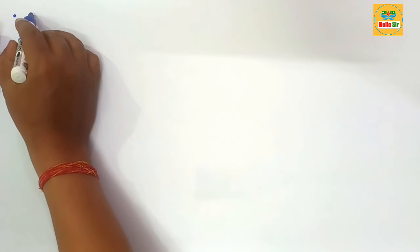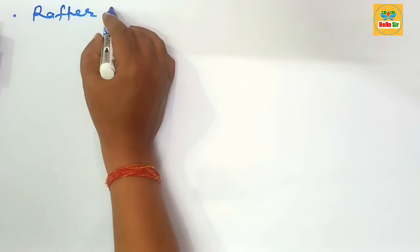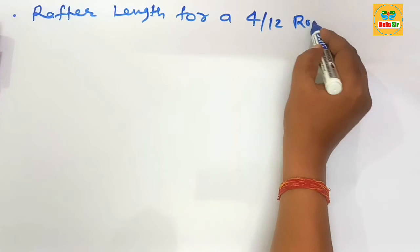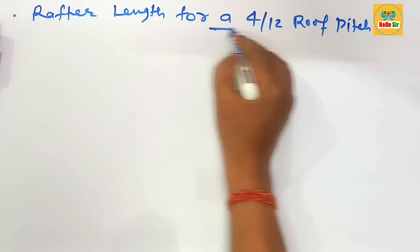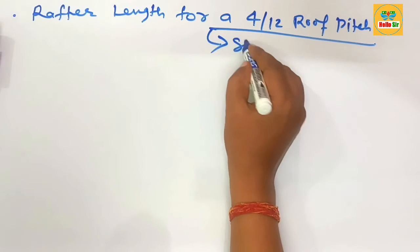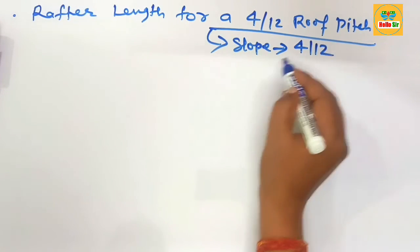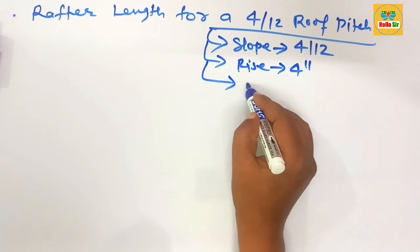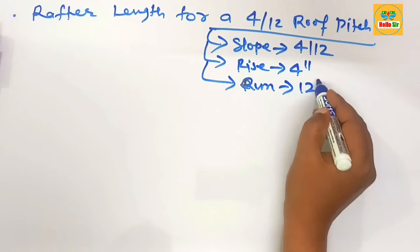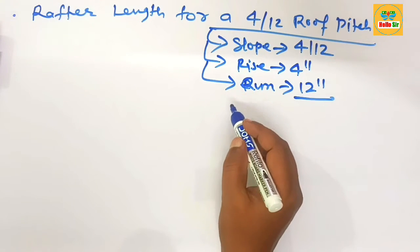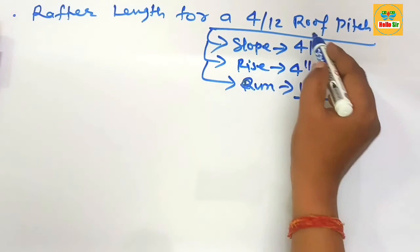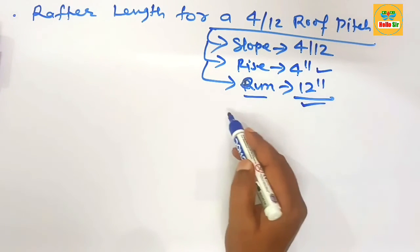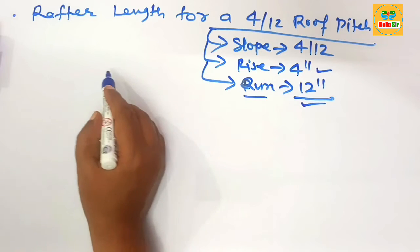Today we'll learn about the rafter length for a 4 by 12 roof pitch. The given roof pitch slope is 4 by 12, meaning there is a rise of four inches for every 12 inches of run. You have a slope roof frame structure in which the slope area is 4 by 12 — four inches of rise for every 12 inches of run.